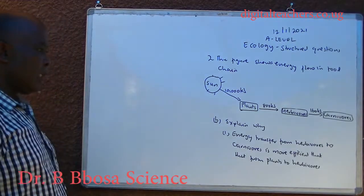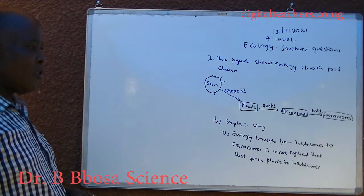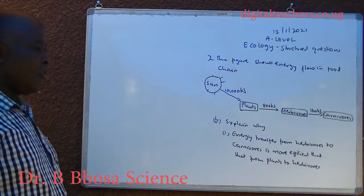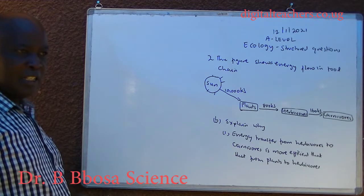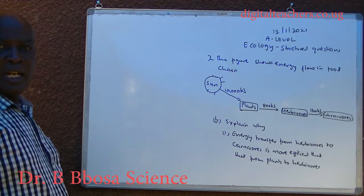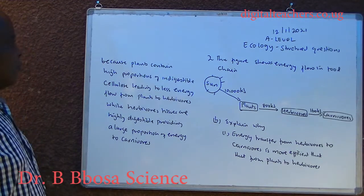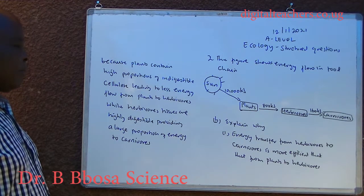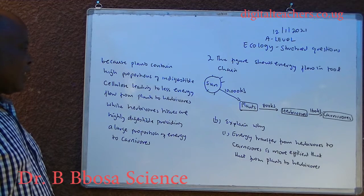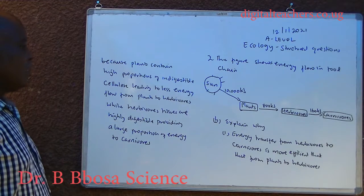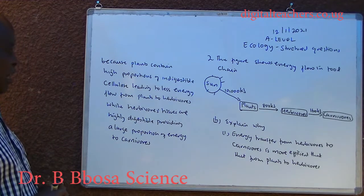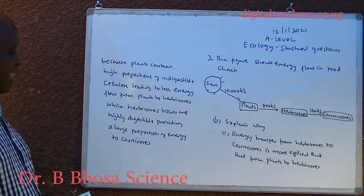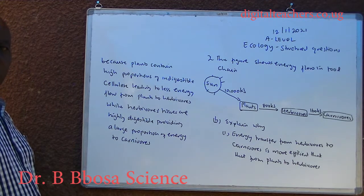B. Explain why energy transfer from herbivores to carnivores is more efficient than from plants to herbivores. You can pause and answer. Because plants contain high proportions of indigestible cellulose, leading to increased energy loss from plants to herbivores, while herbivore tissues are highly digestible, providing a large proportion of energy to carnivores.